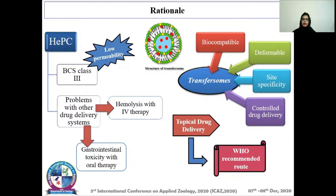Now the rationale of my study. There are many different medications already available for the treatment of cutaneous leishmaniasis, but there are some associated problems. I will talk about miltefosine, which is HEPC and belongs to BCS Class 3. It has low permeability, and when given orally it causes gastrointestinal toxicity. Similarly, it causes hemolysis with IV therapy. According to WHO, topical drug delivery is the recommended route for the treatment of cutaneous leishmaniasis. So we selected transethosomes because they are biocompatible, highly deformable, site-specific, and control drug release.